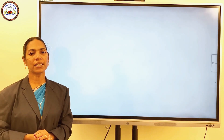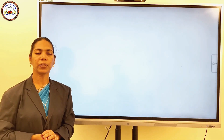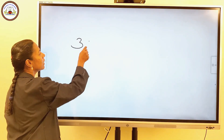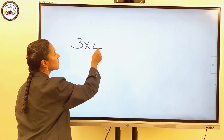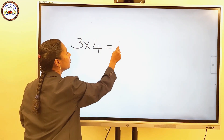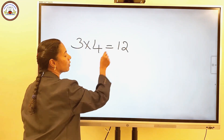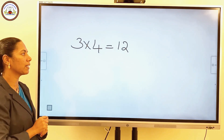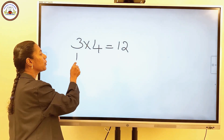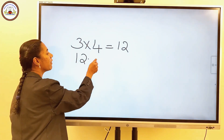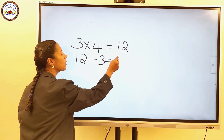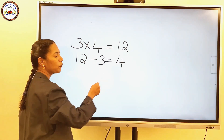From the multiplication table, notice that 3 into 4 is equal to 12. Here the corresponding division fact is 12 divided by 3 is equal to 4.